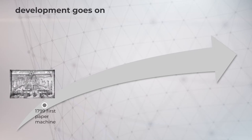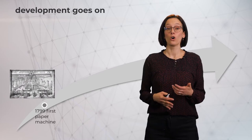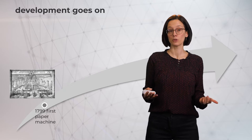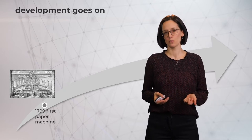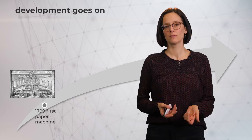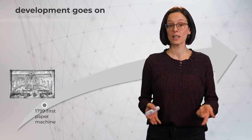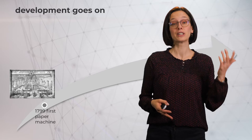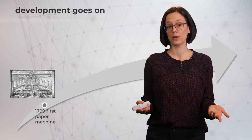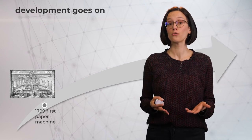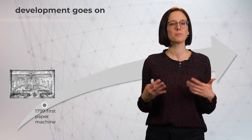As continuous production was implemented in other areas, other technologies emerged. For example, the first paper machine in 1799. Industrial paper production changed the way we produce paper and changed the way we communicate with each other. Continuous manufacturing can be applied to a large variety of fields, and food manufacturing was also changed by continuous manufacturing processes, making food available for many people.